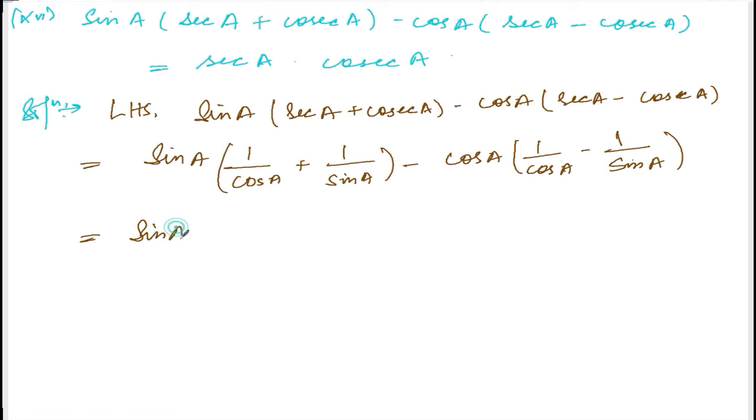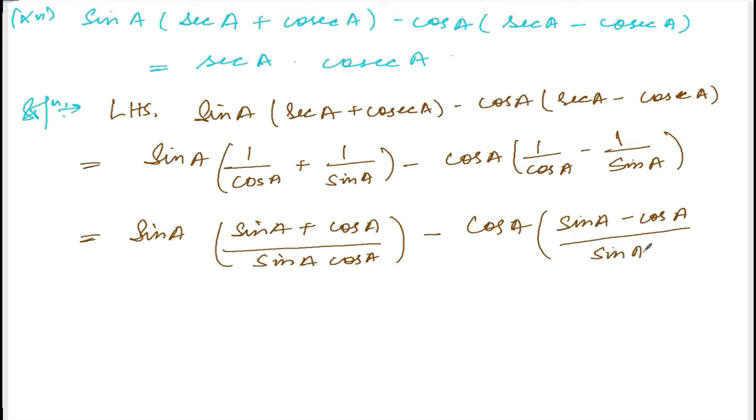Now what will happen? Sin A, if you cross multiply, it will become sin A plus cos A divided by sin A cos A. And here same thing, cos A into sin A minus cos A, that is sin A minus cos A, divided by sin A cos A.